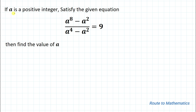The given question is: if a is a positive integer satisfying the equation (a⁸ − a²) divided by (a⁴ − a²) equals 9, then find the value of a.